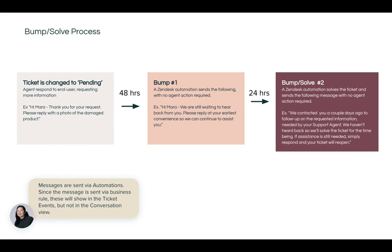This is what the bump-solve process looks like. The agent changes the ticket to pending and sends a message such as: 'Hey Mara, thanks for your request. Please reply with a photo of the damaged product that you're asking about.' Then let's say 48 hours passes — you can select this time frame — and an automation will send the first bump: 'Hi Mara, we're still waiting to hear back from you. Please reply at your earliest convenience so we can continue to assist you.' This is sent out to the end user automatically.